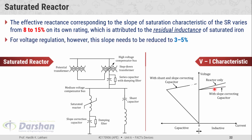For voltage regulation, this slope needs to be reduced to 3 to 5 percent. There are two ways to reduce this slope: first, using a slope correcting capacitor; and second, modifying the construction of the saturated reactor. A treble tripler reactor type of saturated reactor compensator could be used to minimize this slope, but its design is difficult and costly. Hence, the slope correcting capacitor option is preferred.